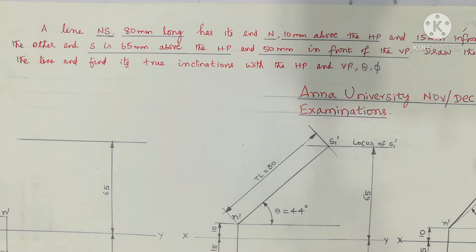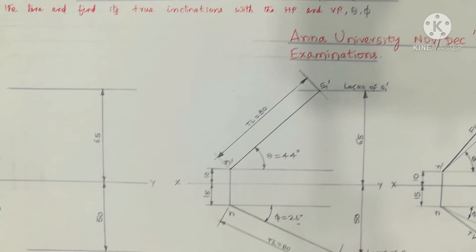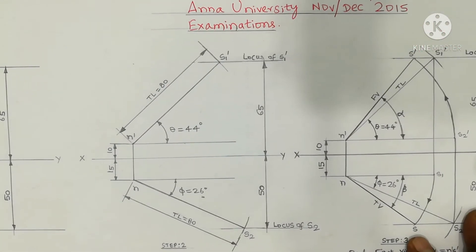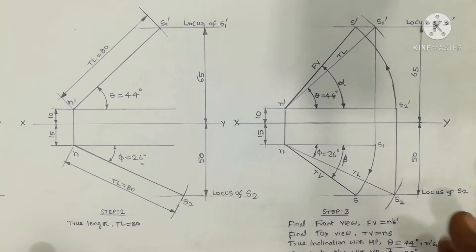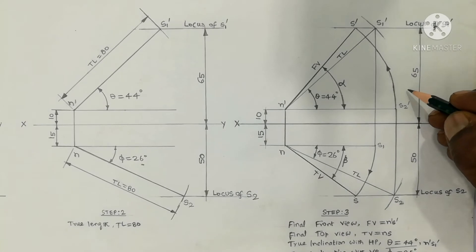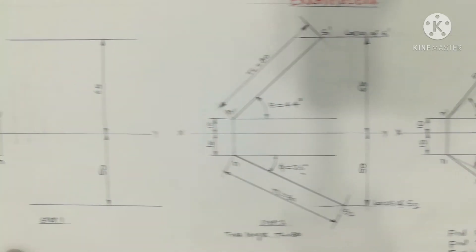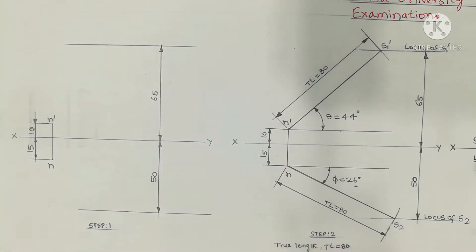So this question appeared in Anna University November-December 2015 examinations. The problem is solved in three steps. In the diagram, each single step is complete and this is for understanding purpose. So given data, what is the question, what is step one - for understanding.